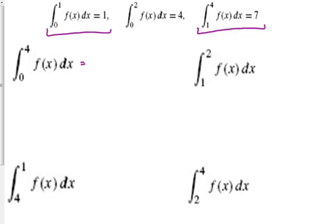So if I put those together, that's going to get me from 0 to 4. So 1 plus 7 equals 8, which would be the value of the definite integral.